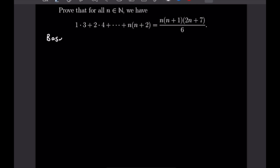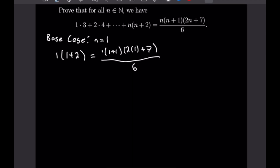Let's go ahead and do our base case first. Our base case will be when n is equal to 1. When n is equal to 1 we will have 1 times 1 plus 2 on our left hand side. We want to show that that is equal to 1 times 1 plus 1 times 2 times 1 plus 7 all over 6. We can see that this will be 9 and 2 so we'll get 18 on the top, and both sides equal 3. So we've proved our base case when n is equal to 1.